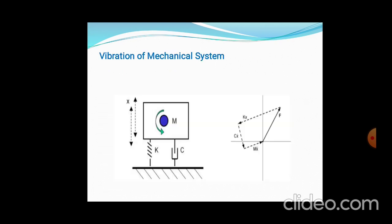Let's see one by one. Vibration of the mechanical system: we are given a spring, a damper, and masses which will be attached with some applied moment. The spring force, Cx-dot is the viscous force, Mx-double-dot is the inertia force, and F is the resultant force.